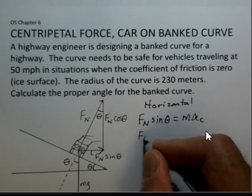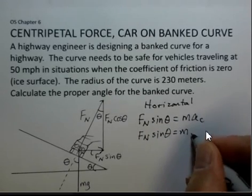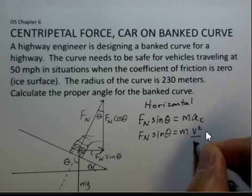And I can go just a step further in symbols here. This centripetal acceleration is V squared over R.